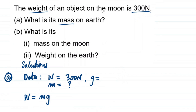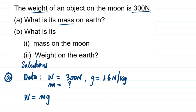You have been told the weight of an object on the moon is 300 newtons, but the question asks for its mass on earth. Since mass is constant throughout the universe, you just need to find the mass of this object on the moon — that is the trick. To find the mass on the moon, we use the acceleration due to gravity of the moon, which is 1.6 newtons per kilogram.